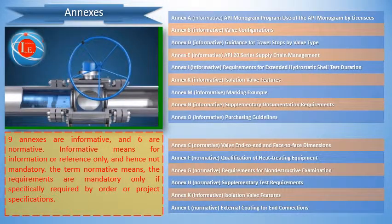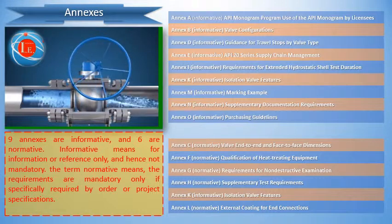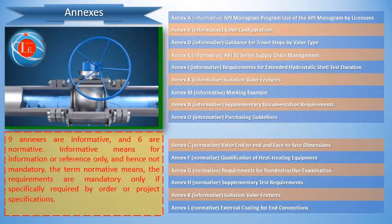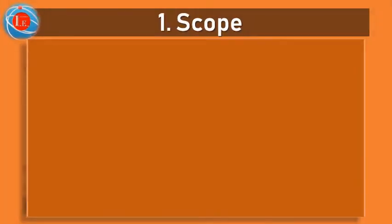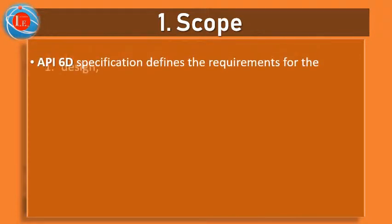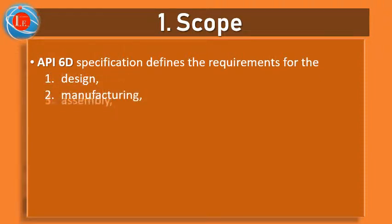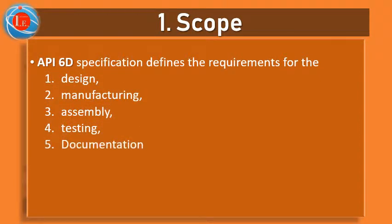Annexes from B to O are listed in this slide. API 6D is a specification that defines the requirements for the design, manufacturing, assembly, testing, and documentation of the following types of valves.